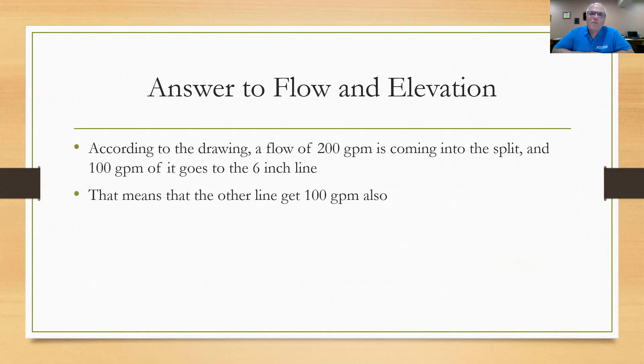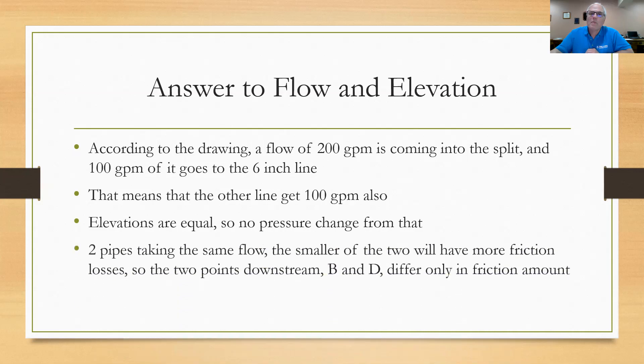According to the drawing, you had a flow of 200 gallons per minute coming into the split. 100 gallons per minute of it goes in the six inch line. That means the other line must be getting 100 gallons per minute also. Elevations are equal, so there's no pressure change due to elevation. All of it's got to be due to friction. The two pipes are taking the same flow rate. The smaller of the two is going to have more friction. Therefore, the two points downstream B and D differ only in friction amount. So the answer then is B. Point B will be lower in pressure than point D.